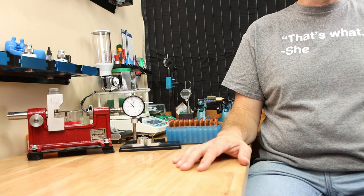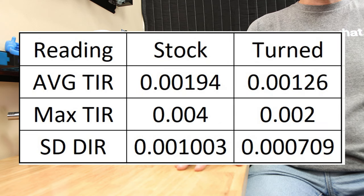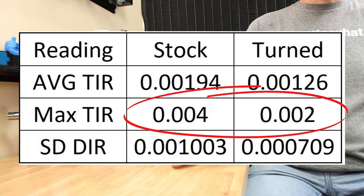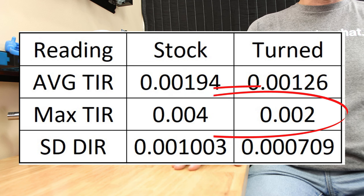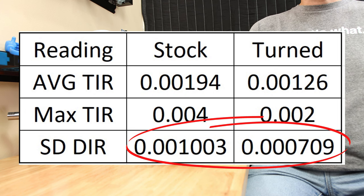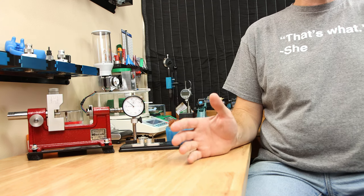But what about the extremes? Well, that's where we can really see the difference. The max total indicator runout on our stock brass was four-thousandths of an inch, whereas the worst case on our turn brass was two-thousandths. Standard deviation of the stock brass was about a thousandth, where the turn brass was 0.7.